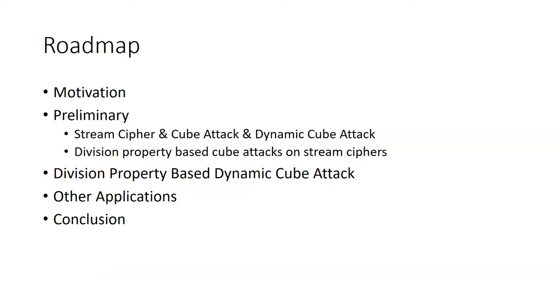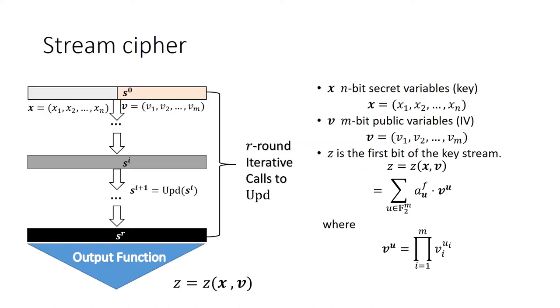We now introduce the concepts used in this paper. In the context of cube attacks, a stream cipher starts from an initial state S0 containing secret key bits x and the public IV bits v. Then the updating function is called iteratively for r rounds to generate a state Sr where key and IV bits are thoroughly mixed. Finally, an output bit is generated as z. The algebraic normal form ANF of z can be represented as a complicated polynomial of key and IV variables as follows. The coefficient A_u to the F is a binary polynomial of key bits corresponding to the IV monomial v to the u.